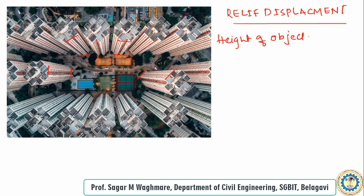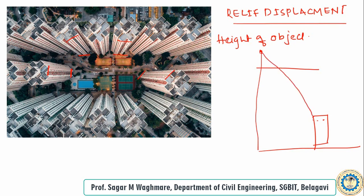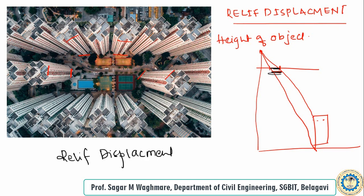When you look at this concept over a photograph, imagine a building on the ground. A photo is taken from above, and the object is captured. One ray captures the top and another captures the bottom. You get two points, and this distance — the displacement between where the top and bottom are captured — is called relief displacement. It helps us find the height of objects.